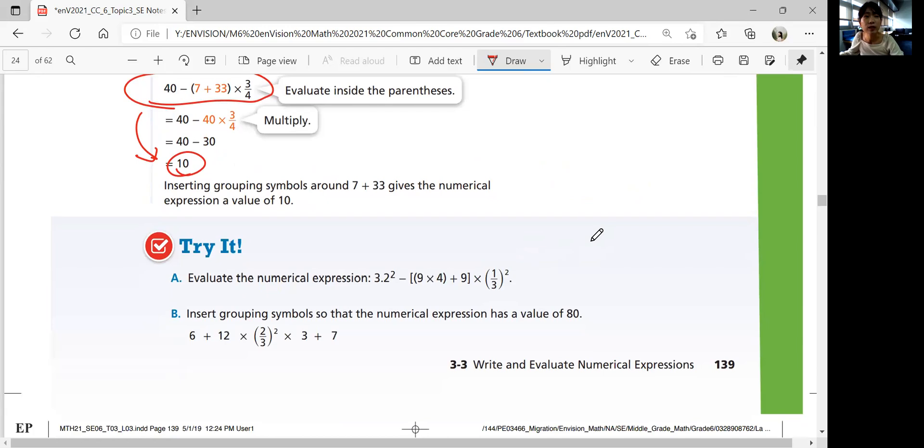Let's try these questions on the bottom of the page. Part A and Part B. Evaluate these numerical expressions and insert a grouping symbol. Put a bracket over some place, or parentheses. Come back when you're ready.